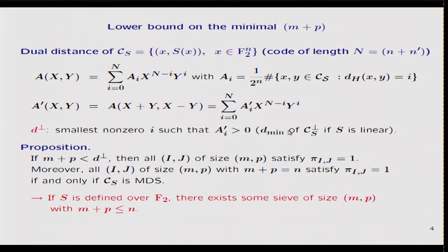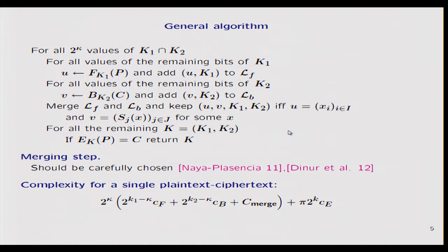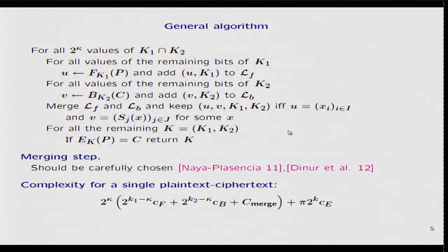Now a few words about the time complexity of the attack. The general structure is very similar to classical meet-in-the-middle. We perform an exhaustive search for all key bits involved both in the forward and backward computation. In the forward direction, we examine all possible values for the remaining bits of K1, and in the backward direction, for the remaining bits of K2. We get two lists which need to be merged by considering only pairs corresponding to valid inputs and outputs for S. Like this, we obtain some sieve, and only some proportion pi of the keys remain. The last term corresponds to the exhaustive search over the reduced key space.